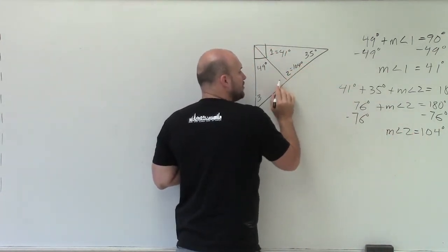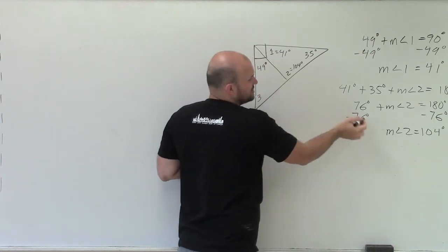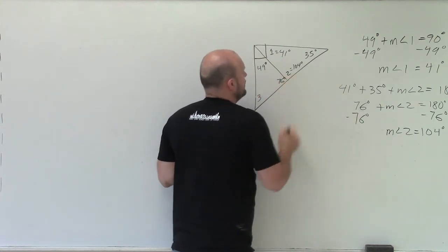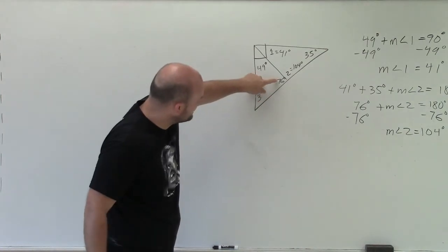So since we know angle measure of angle 2 is 104 now, we know that 104 plus whatever this angle is adds up to 180, which is 76 degrees. Okay. So now we know that this is 76 degrees.